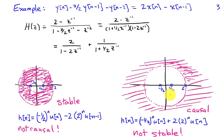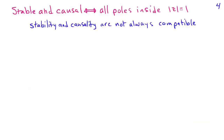On the other hand, if we want the causal inverse Z transform, the ROC has to extend outward from the pole of largest radius, which is the pole at Z equals 2. Taking the inverse Z transform gives H of n equals negative one-half to the n times U of n, plus 2 times 2 to the n times U of n. The second term, 2 to the n U of n, blows up, so H of n is not absolutely summable — this is an unstable system. This example clearly illustrates that for a system to be both stable and causal, all of its poles must lie inside the unit circle. Stability and causality are not always compatible.